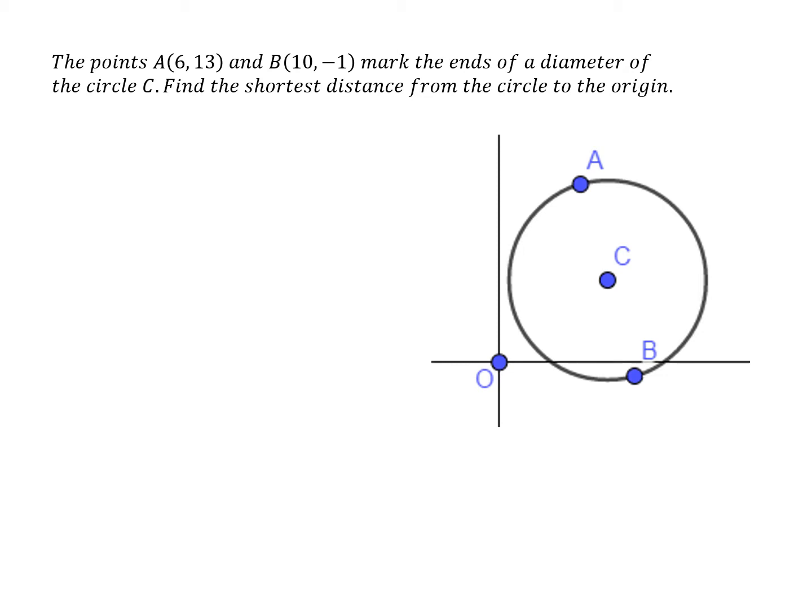is we're trying to find the shortest distance from the circle to the origin. So we're going to be interested in a point somewhere around here where that's the point which is closest to the origin and that's going to